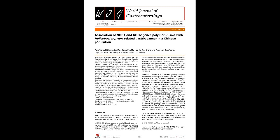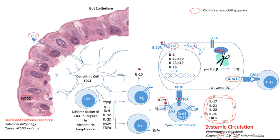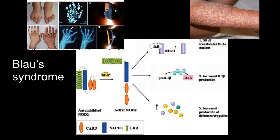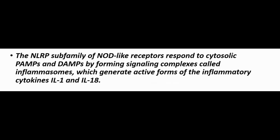Both NOD1 and NOD2 appear to be important in innate immune responses to bacterial pathogens in the gastrointestinal tract, such as Helicobacter pylori and Listeria monocytogenes. There is great interest in the finding that certain NOD2 gene polymorphisms increase the risk for an inflammatory bowel disease called Crohn's disease. Also, gain-of-function mutations of NOD2 that cause increased NOD signaling lead to a systemic inflammatory disease called Blau syndrome.